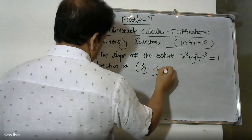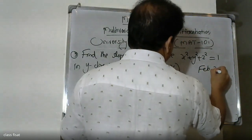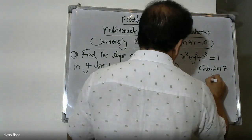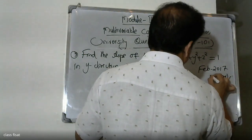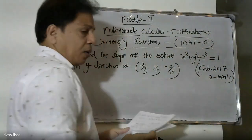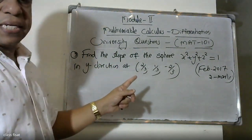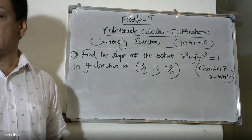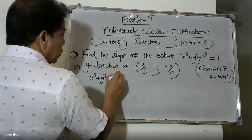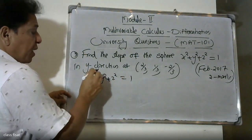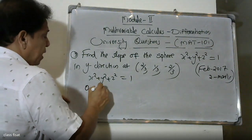The point given is (2/3, 1/3, minus 2/3). The problem is to find the slope of the sphere x-squared plus y-squared plus z-squared equal to 1 in the y-direction.